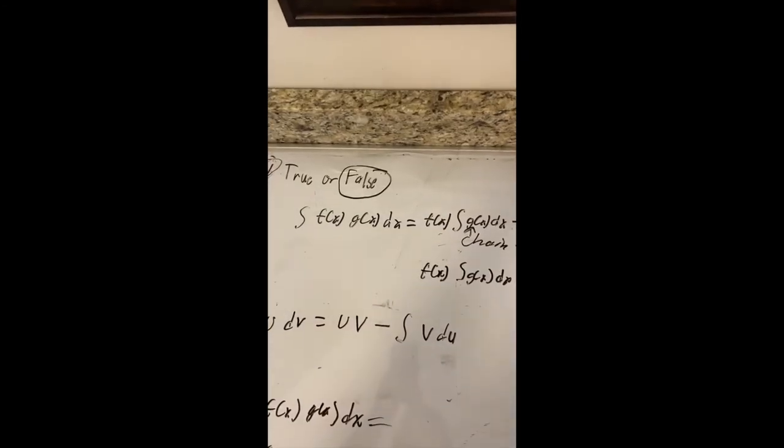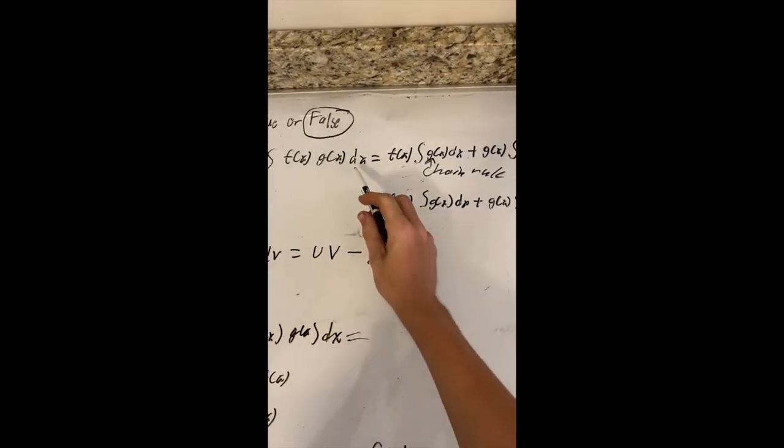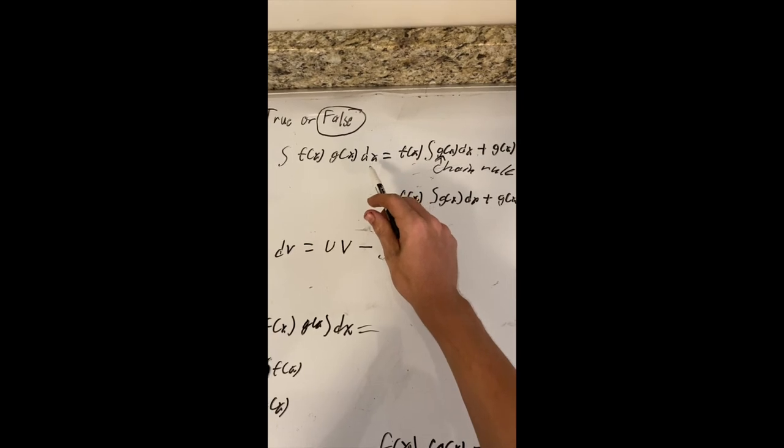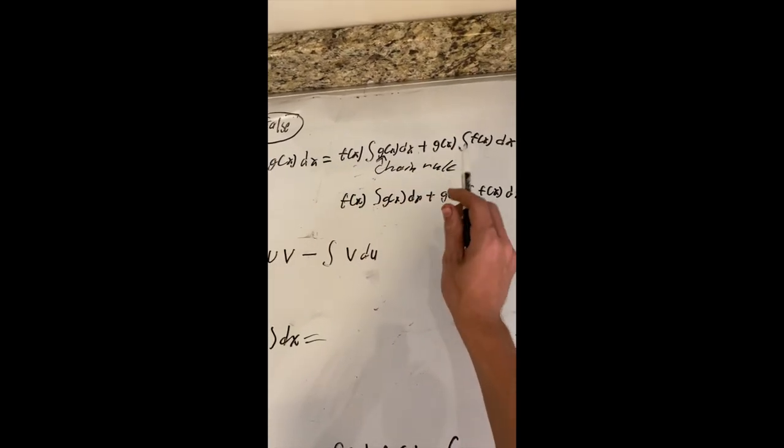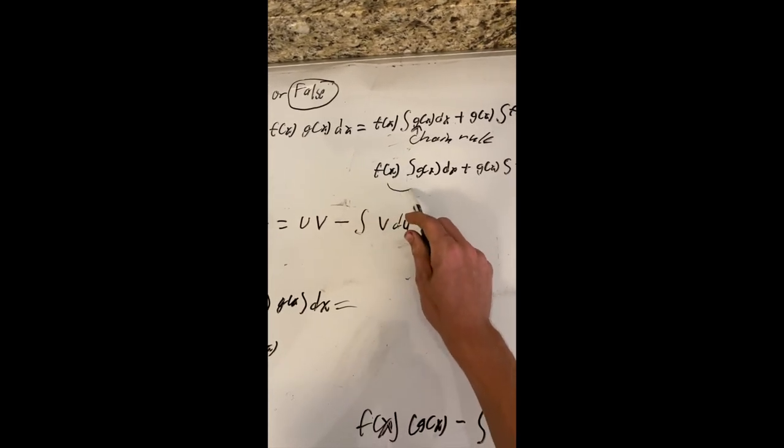Okay. For part b of 11, the answer is false because I need to solve this. I need the integration by parts version of this. And this is actually just a chain rule because it breaks that equation into two different parts. So I want to multiply it by that.